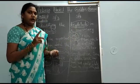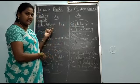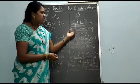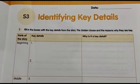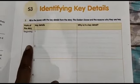Now in your workbook there is a greedy story. First we look into S3 workbook and then we will go to S4. Open your workbooks, write the date — Identifying Key Details. See the first question: fill in the boxes with the key details from the story The Golden Goose and the reasons why they are key. In the first column they have given beginning, middle, end of the story. In the beginning, write the key details which are very important. Next, give the reason why it is a key detail. In the middle and at the end, do the same.